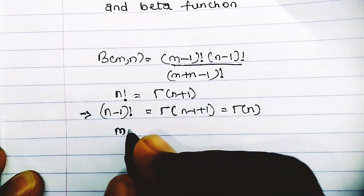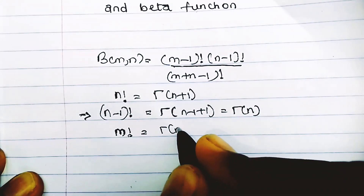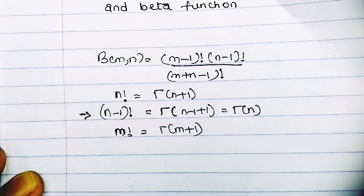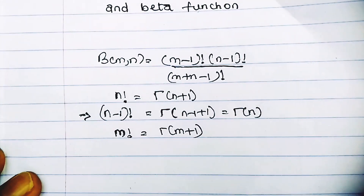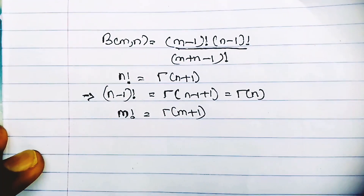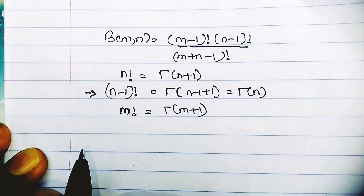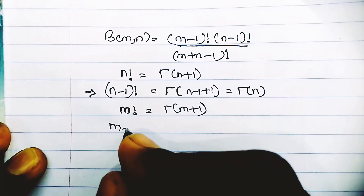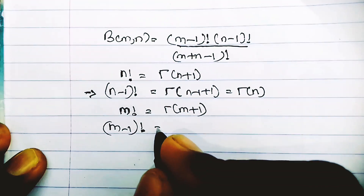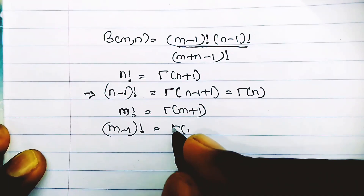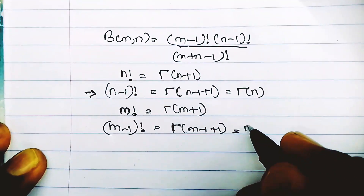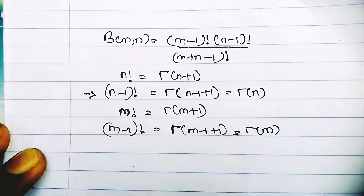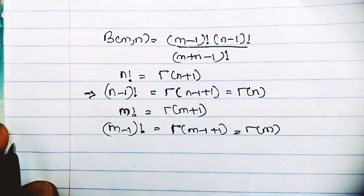Since we also know that m factorial is equal to gamma of m plus 1 — for example, gamma of 3 plus 1 is equal to 3 factorial — that means m minus 1 factorial will be equal to the gamma of m minus 1 plus 1, which is the gamma of m. So we've established this second part: m minus 1 factorial equals gamma of m.